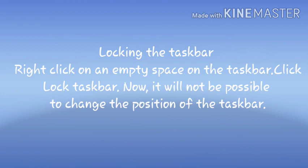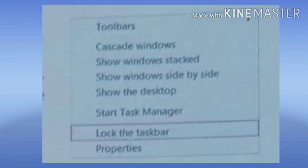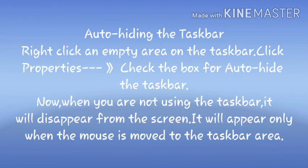Once you click 'Lock the Taskbar', it will not be possible to change the position of the taskbar. Next, auto-hiding the taskbar: right-click an empty area on the taskbar, click 'Properties', and check the box for 'Auto-hide the Taskbar'.